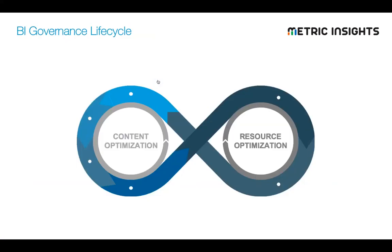Looking at this diagram — think about the two areas you're trying to optimize: content and resource optimization. The first thing you always do is build and deploy solutions. Implement a set of dashboards and reports, put them out there, train your users, get them in the system. But it shouldn't be a fire-and-forget. You shouldn't be building things and then immediately moving on without coming back and reviewing and providing accountability.